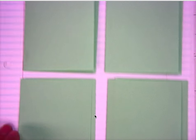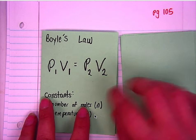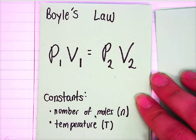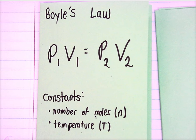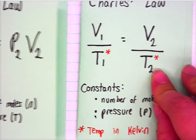Make sure that all four of them will fit on your paper and that they fold that way. The first one we are going to talk about is Boyle's Law. Boyle's Law is where P1V1 equals P2V2, or pressure 1 times volume 1 equals pressure 2 times volume 2, where the constants are the number of moles, which we refer to as N, and the temperature T.